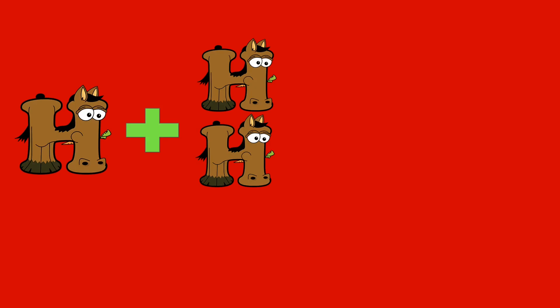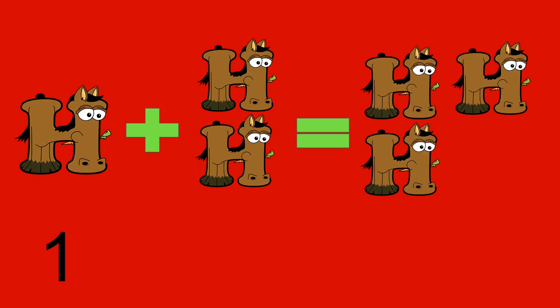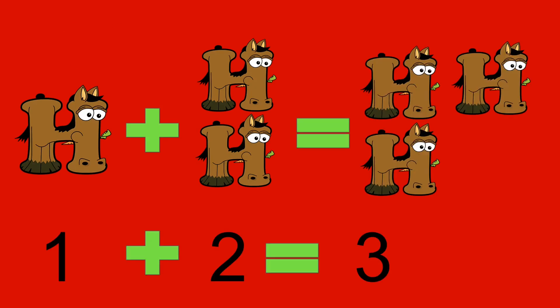1 horse plus 2 horses equals 3 horses. 1 plus 2 equals 3.